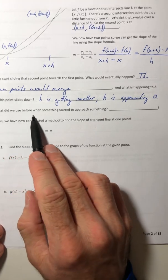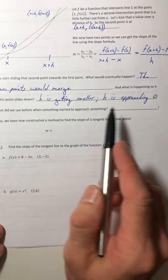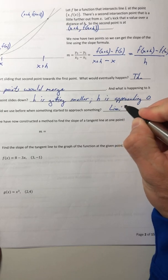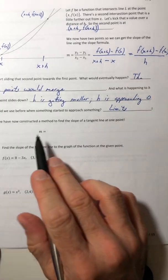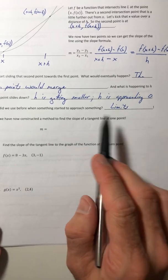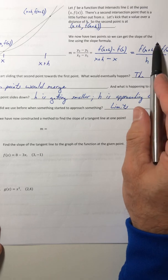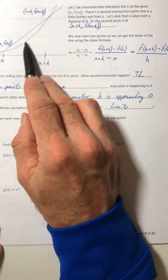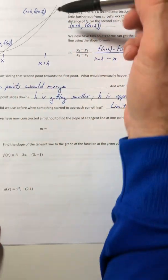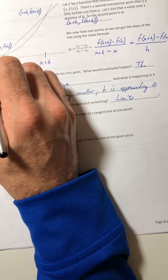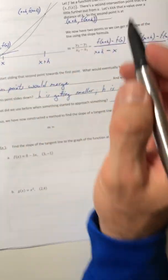And what did we use before when something started to approach something? Limits. So, thus, you've now constructed a method to find the slope of a tangent line at one point. This is the overall slope. But we're going to let h approach zero to get that point to slide down. And when we do that, that line is going to start to tilt until it becomes an actual tangent line.